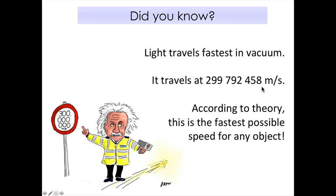According to scientists like Albert Einstein, 300 million metres per second is the fastest speed any object can travel. Light actually travels fastest in a vacuum. This is quite interesting — if you want to know more, you can read up about it.